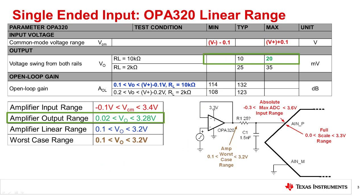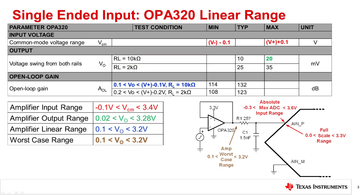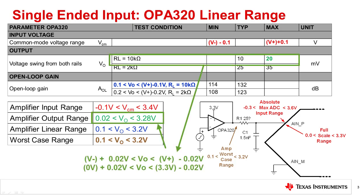The amplifier's output range, shown in green, is limited by the supply voltage and the loading. In this example, the SAR input is a switched capacitor, so the steady state load is high impedance. Thus, we use the specification for the highest impedance load, 10 kilohms. In this case, the worst case output limitation is 20 millivolts. For a 0 volt and 3.3 volt supply, this translates to an output swing of 0.02 volts to 3.28 volts.